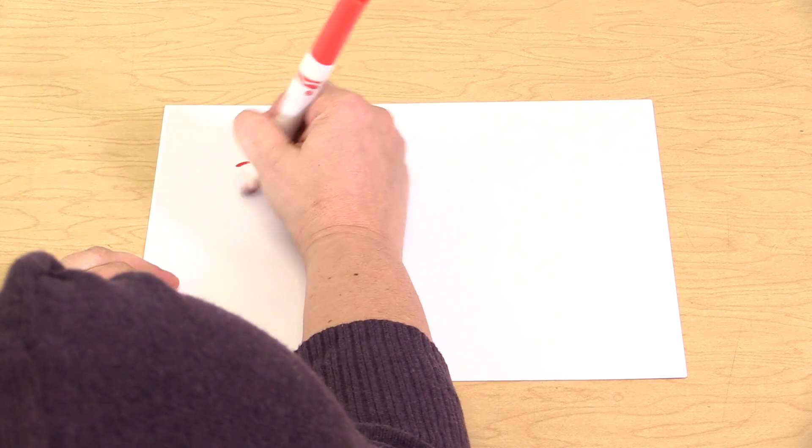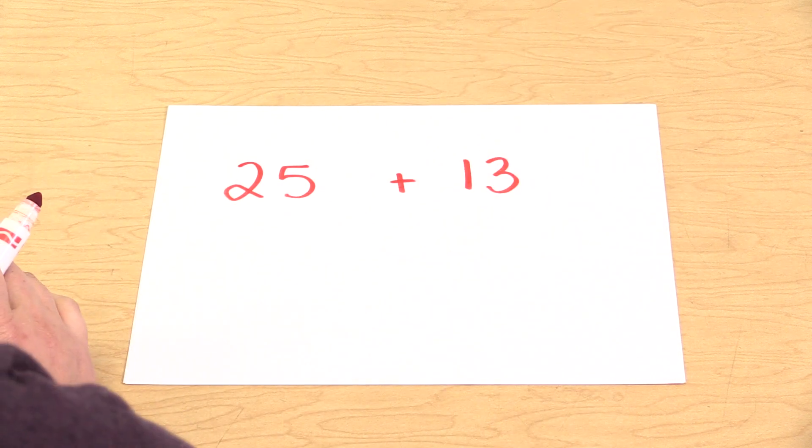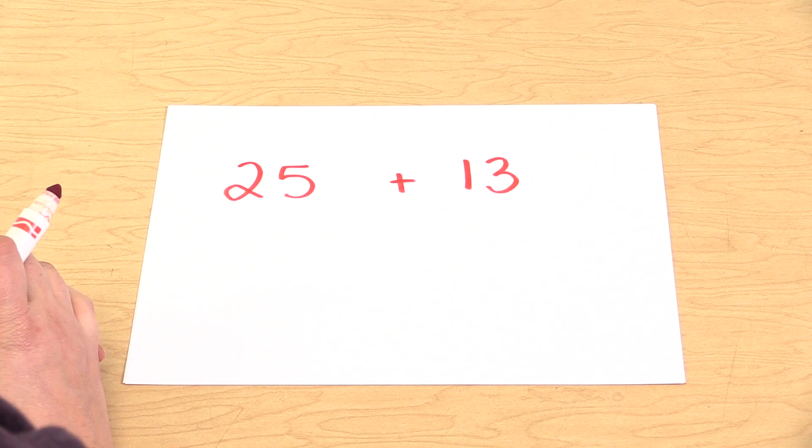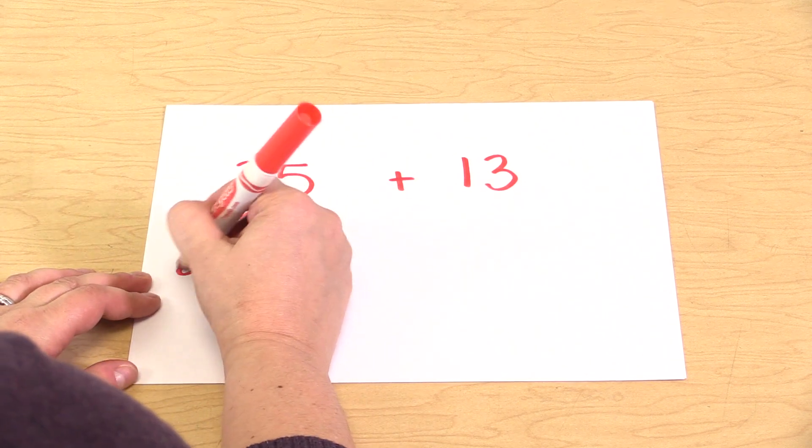Let's try this problem without cubes. So if we wanted to add 25 plus 13, we would have the students break apart the numbers into tens and ones. So 25 would be broken up into 20 or two tens and five ones.